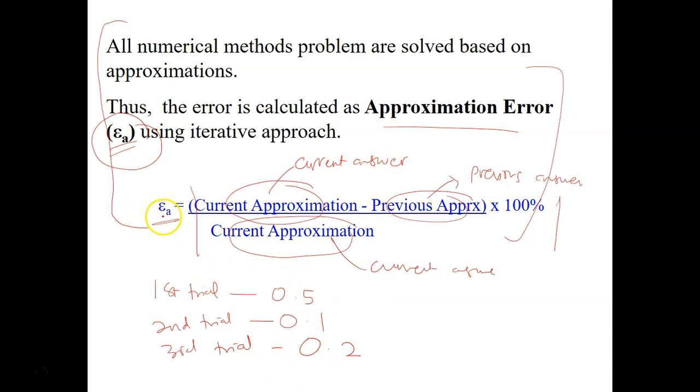So to calculate EA for the first trial, you cannot calculate EA for the first answer because there is no previous approximation. But for the second answer, you can calculate your approximation error for the second answer.